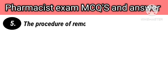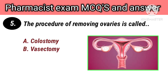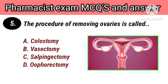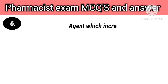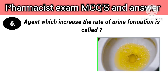The procedure of removing ovaries is called options: A. Colostomy, B. Vasectomy, C. Salpingectomy, D. Oophorectomy. Right answer is D. Oophorectomy.